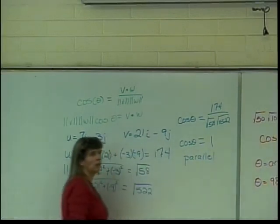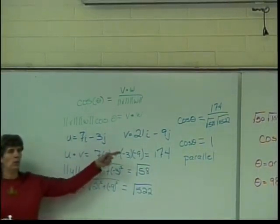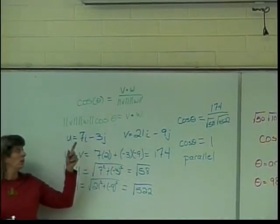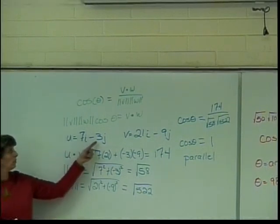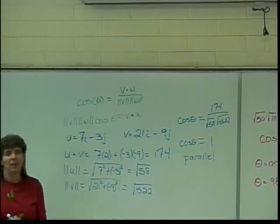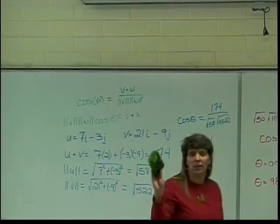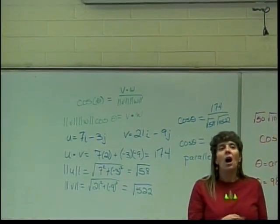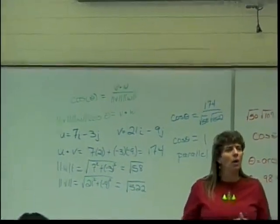By the way could anybody look at these and tell me they were going to be parallel? Three times seven is twenty-one, three times negative three is negative nine. You guys might not notice that.